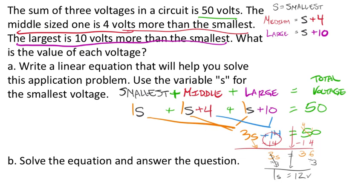So what was the question? What was the value of each voltage? The smallest voltage we now know is 12 volts. The medium one is small plus 4. So that's going to be 12 plus 4, which is 16 volts. So the middle is 16 volts.